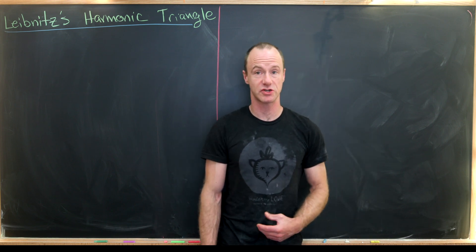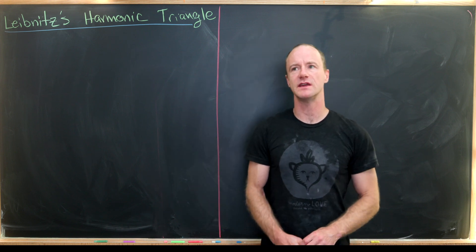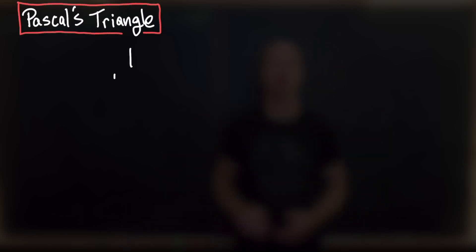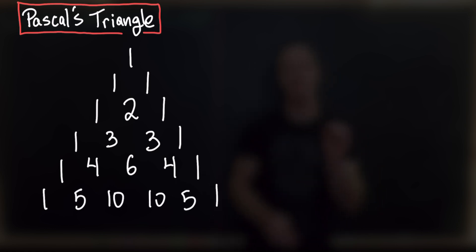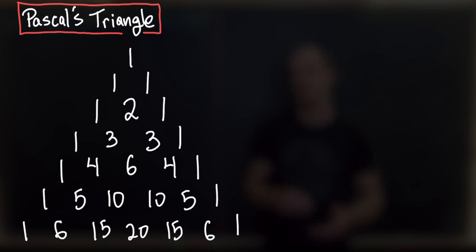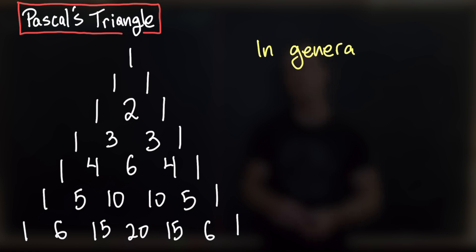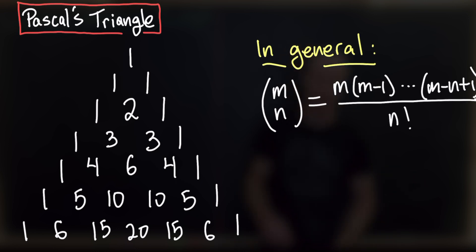Today I want to talk about something called the harmonic triangle, which is due to Leibniz, and it's a little bit related to Pascal's triangle. Pascal's triangle has an outer triangle of ones, and then every term is built by taking the sum of the two terms above it. There are many well-known properties: the entries are binomial coefficients, the sum of a row gives a power of two, and a diagonal sum gives Fibonacci numbers.